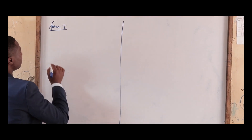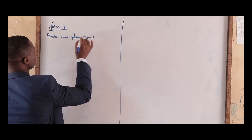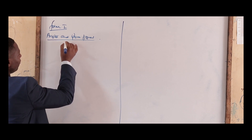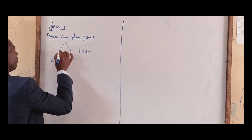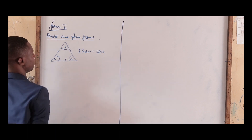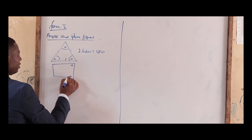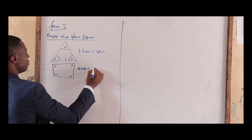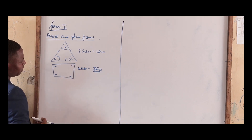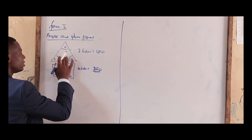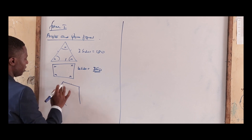Let us look at angles and plane figures. From primary level we know that in a triangle, which has three sides, the sum of the interior angles will add up to 180 degrees. If we have a square or a rectangle, four sides, the angles add up to 360 degrees. So what formula are we using to arrive at that?